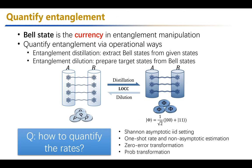This talk mainly considers quantifying entanglement via operational ways. We recall that the Bell state is the currency in entanglement manipulation. To quantify entanglement operationally there are two major tasks: entanglement distillation and entanglement dilution, considering transformations between given states and Bell states and how to quantify the rates. In traditional information theory there are many settings like Shannon asymptotic IID, one-shot, non-asymptotic, zero-error, and even probabilistic protocols.